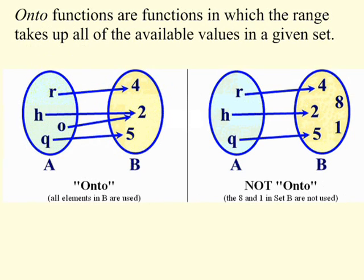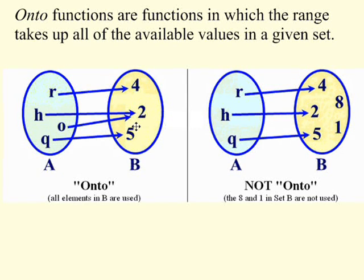Let's move on to onto functions. Onto functions are functions in which the range takes up all of the available values in a given set. Looking at our first example to the left, the available values in the given set B are 4, 2, and 5. Does the range take up all of those values? Yes, it does. Therefore, it is onto.